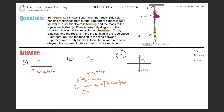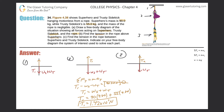Rearranging, T1 equals the weight of the superhero plus the weight of trusty sidekick. Weight equals mass times gravity, so T1 = (90 × 9.80) + (55 × 9.80). This gives approximately 1.42 × 10³ newtons. That takes care of part B.